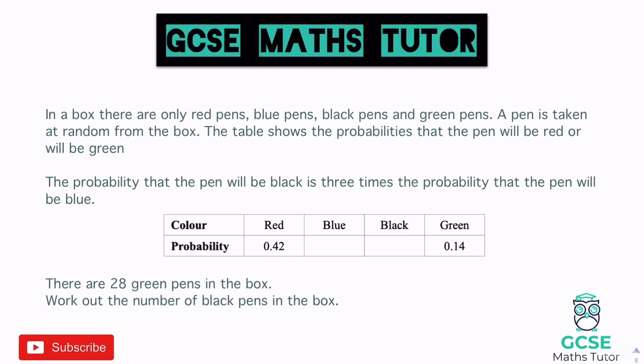Now let's look at something slightly different. In a box there are red, blue, black and green pens. The table gives the probabilities for red and green. The probability of black is three times the probability of blue. There are 28 green pens — work out the total number of black pens.